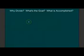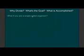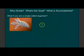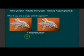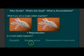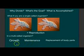The next thing we need to discuss is why — what's the purpose? What are we accomplishing by dividing a cell? Well, if you're a single-celled organism and you undergo this process of mitosis and cell division, for you that would be reproduction. But in a multicellular organism, mitosis and cell division can be used for growth, maintenance, and replacement of body parts.